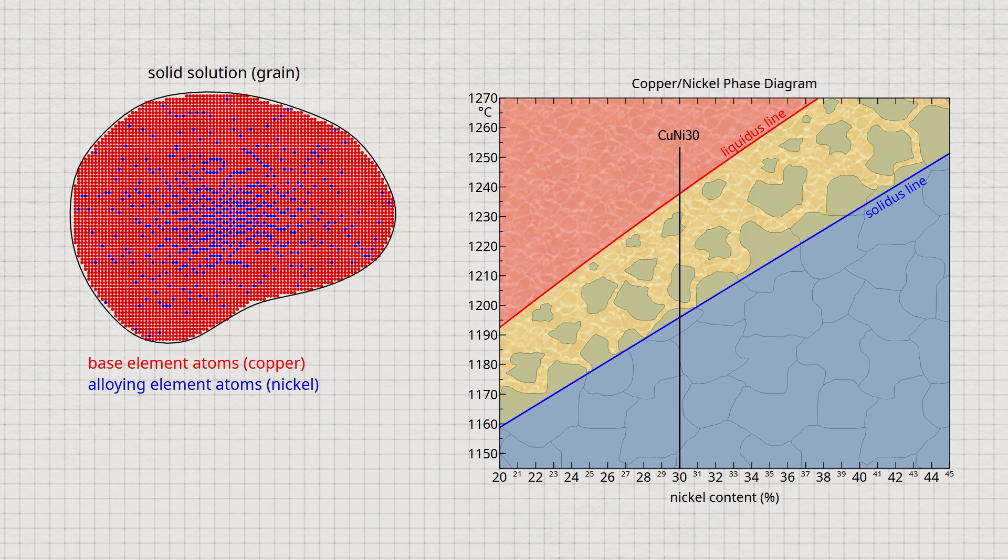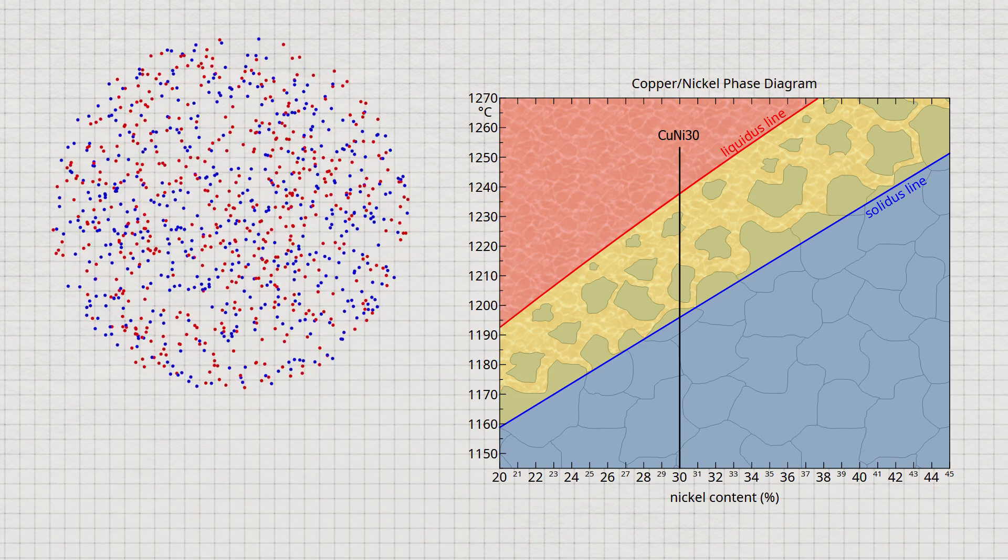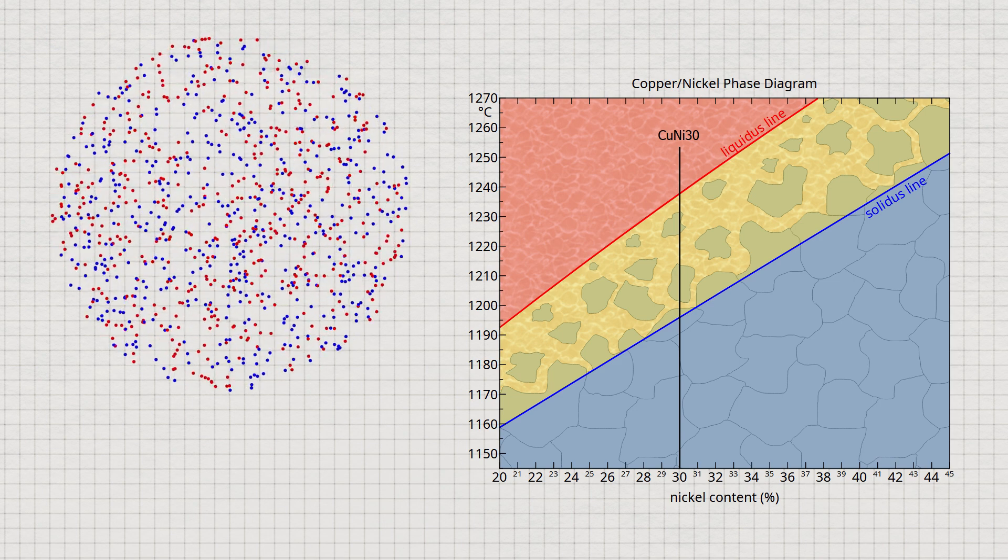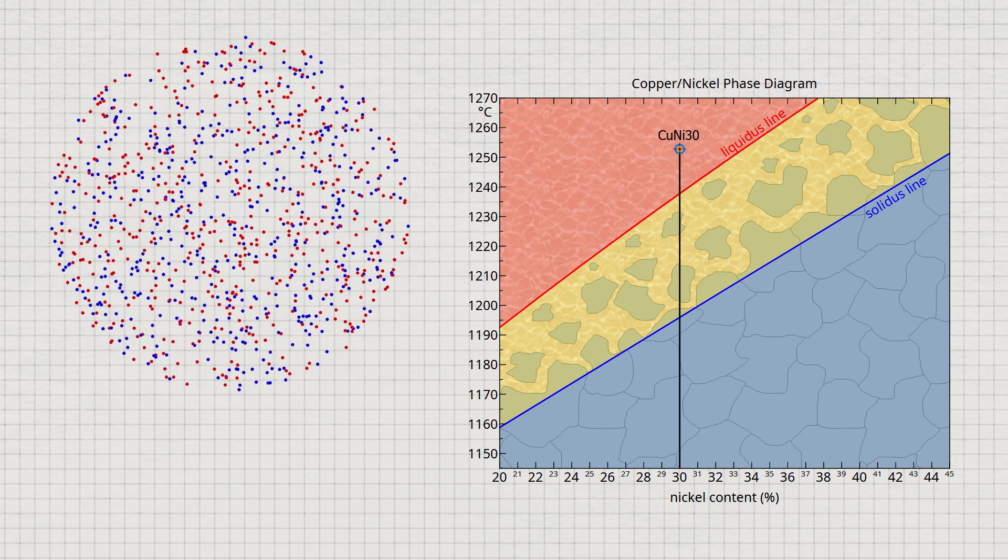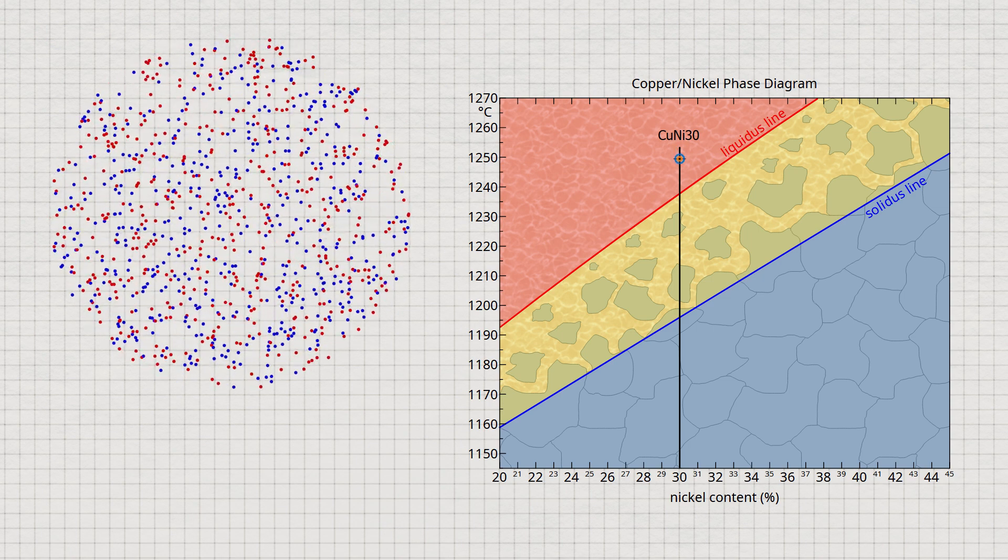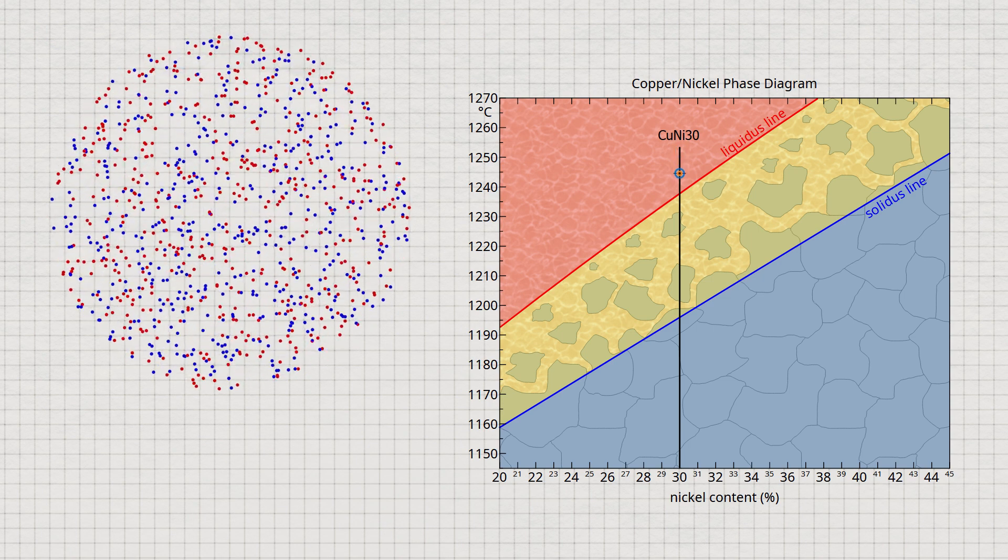The actual solidification takes place in the area marked in yellow between the liquidus and solidus lines. The animation schematically shows the nickel atoms in blue and the copper atoms in red. In the melt, there is initially a homogeneous mixture of both types of atoms.